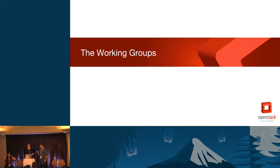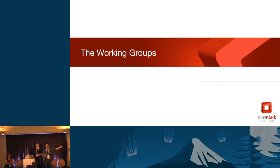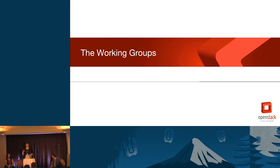We're not going to spend too much time on each working group, but we want to provide a high-level overview of what the different working groups are today. There will be links on all these slides and the slides will be published later, so even if you don't catch the URL right now, you can always go back and refer to the material. Think about whether any topic really resonates with you or that you're passionate about — we'll help you get involved. Each slide has links to both the wiki page and the mailing list; see what you're interested in, check out the wiki page, it has meeting notes and times.